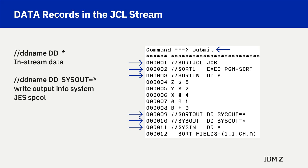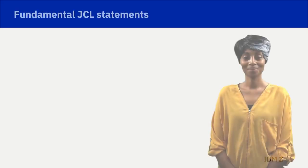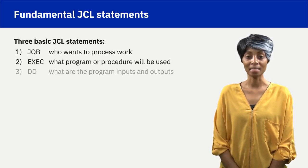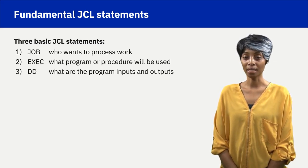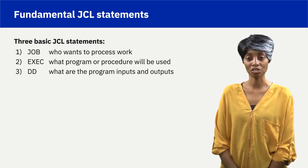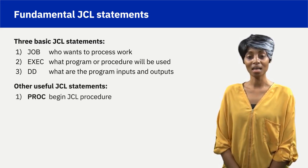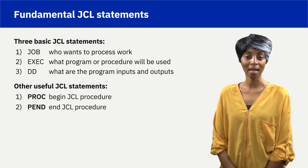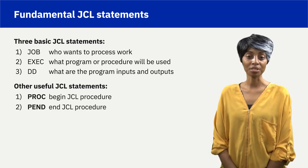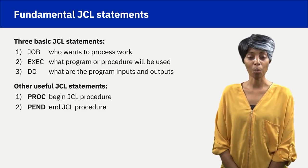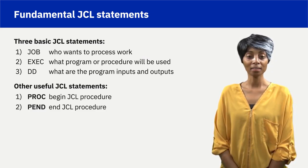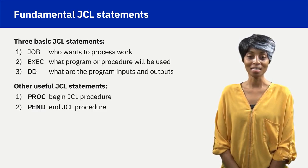The SUBMIT command on the command line places the JCL and in-stream data records in the system input queue for processing. The previous example was a simple in-stream JCL demonstrating valid JOB, EXEC, and DD statements. Most production JCL relies on JCL procedures, which is reusable JCL. A JCL procedure can be in-stream or stored in the JCL procedure library to be located and expanded. The JCL procedure typically includes the program to be executed and required DD names. A user JCL includes a JOB and EXEC statement where the EXEC statement references a JCL procedure instead of a program.